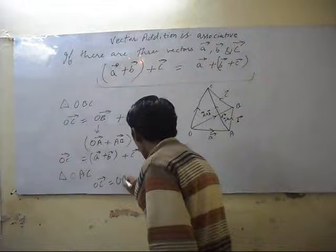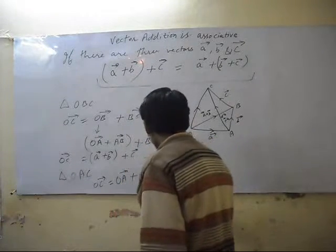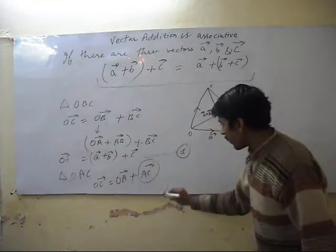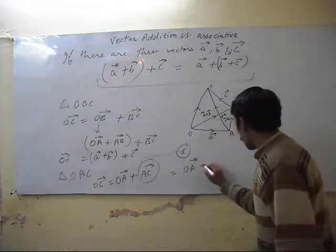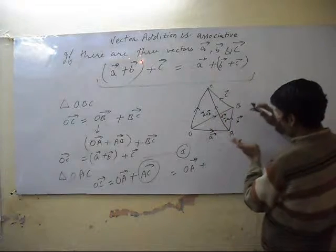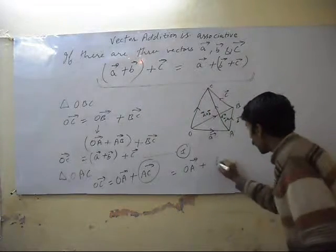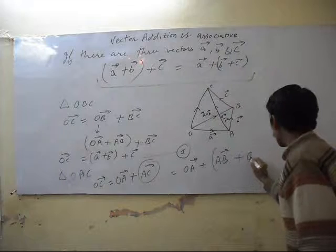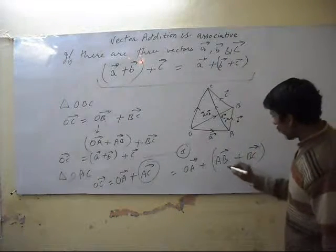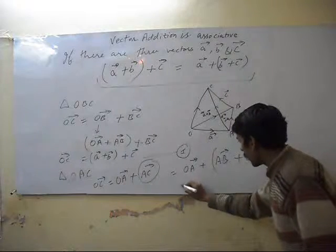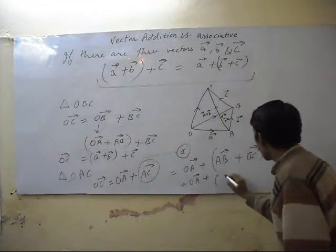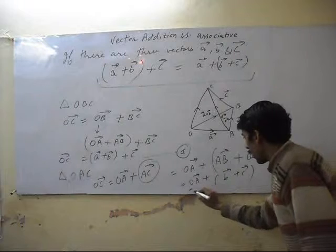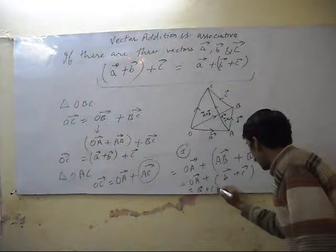OA vector plus AC vector. Now we will expand AC. OA vector plus AC, where AC is equal to AB vector plus BC vector. So this gives OA vector plus AB vector plus BC vector, which is A vector plus B vector plus C vector.